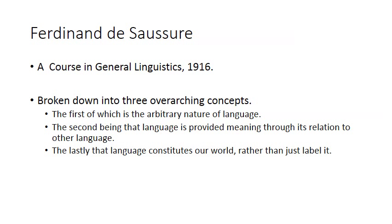All of this brings us back to Ferdinand de Saussure. He was a Swiss linguist who wrote a Course in General Linguistics in 1916. What he was really trying to do was figure out how our language works and what it has the power to do because of how it works. If you want to break his text down into three major concepts, we're going to look at the arbitrary nature of language, the way that language works in relation to other language, and how language constitutes our world rather than just labeling it.